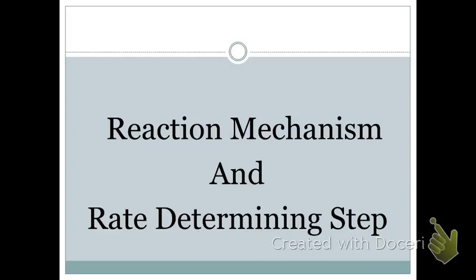Today we're talking about reaction mechanisms and the rate determining step. So far when we've seen balanced equations, we think that's what happens. But honestly, what's happening is you're seeing the net overall change. Usually there is a series of steps that that reaction has to go through, and we call that the mechanism.